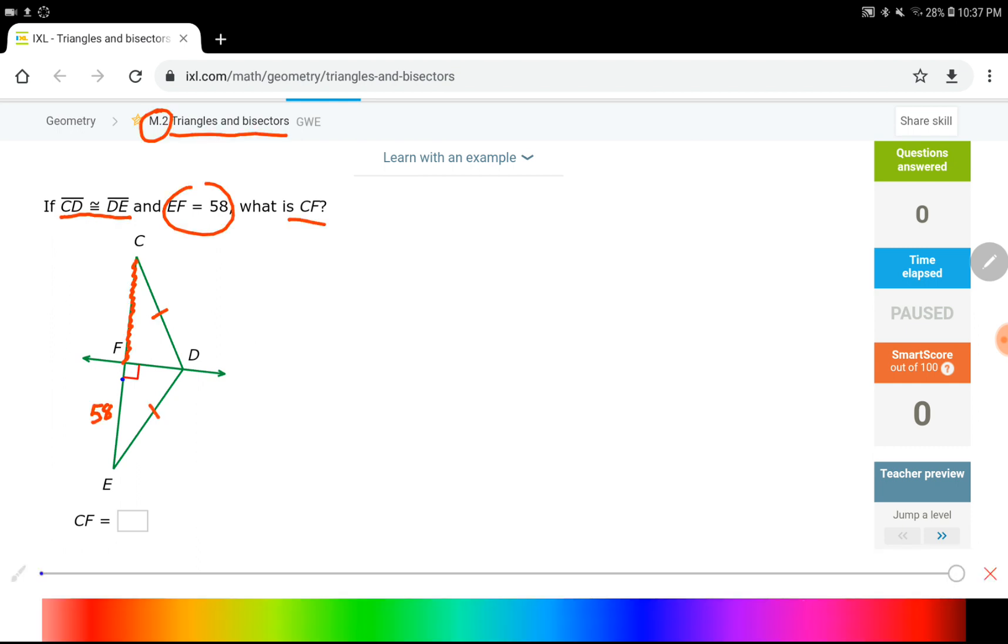When I look at this triangle over here, it looks like I have a perpendicular bisector. Because when you have an isosceles triangle, where you have two equal sides, such as CD and DE, if you have a perpendicular side that goes across, that's going to cut that side into equal pieces. If FE is equal to 58, if this right here is 58, that one here is going to be 58 as well.